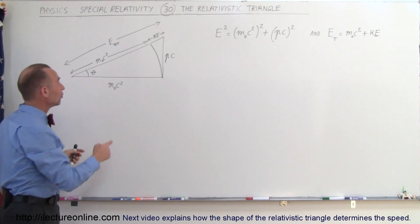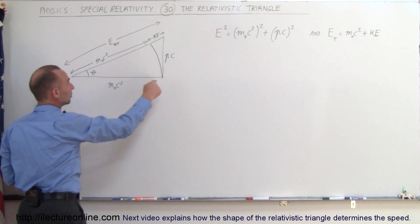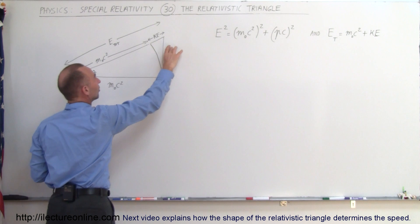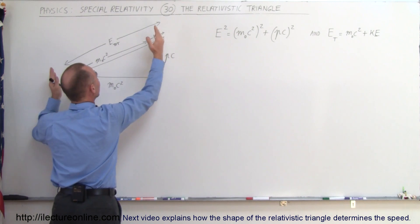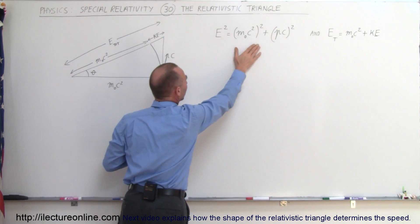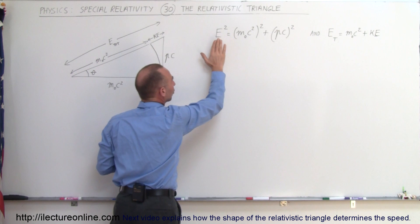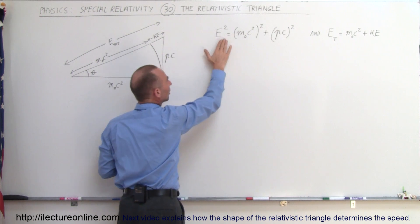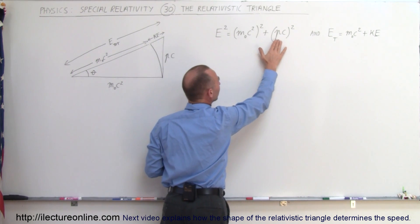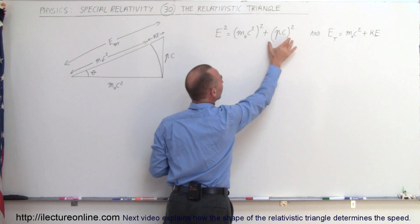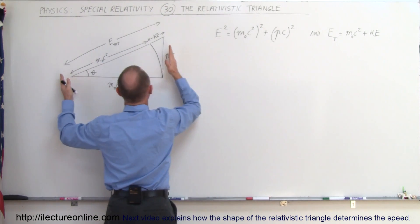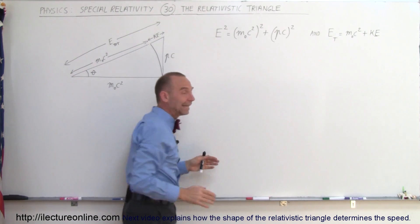If we use the Pythagorean theorem here, we can see that this side squared plus this side squared must equal this side squared, which lends itself to this equation: the total energy squared is equal to the rest mass energy squared plus the momentum times the speed of light, quantity squared. So this triangle is a visual representation of that equation.